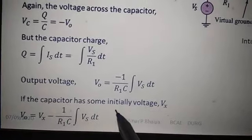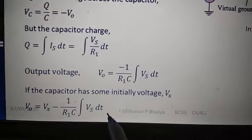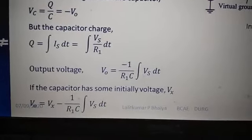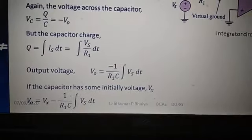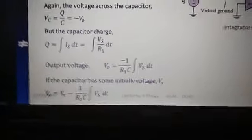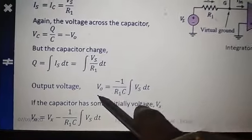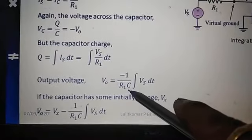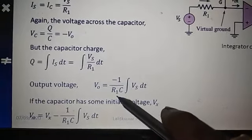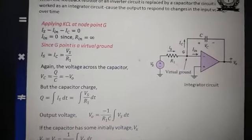If the capacitor has some initial voltage Vx, then V0 = Vx - 1/(R1C) × ∫Vs dt, where Vx is the initial condition. If before applying the input there is any charge on the capacitor, this is called Vx or V(0) at time t = 0. This is the initial condition. The output is proportional to integration, where 1/(R1C) is the integration constant or time constant of the integrator.